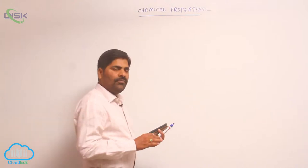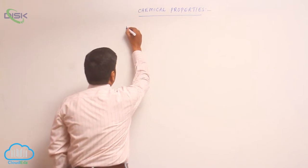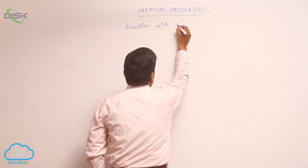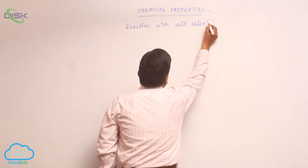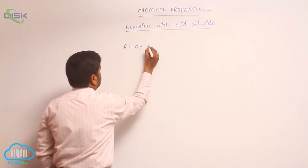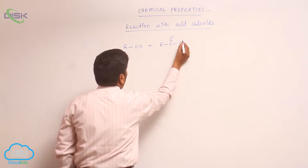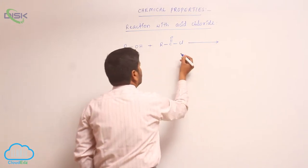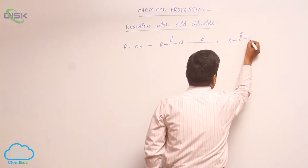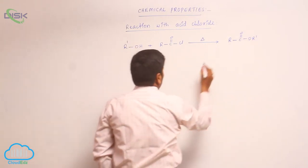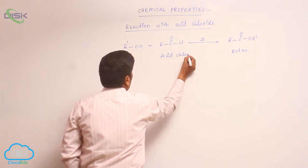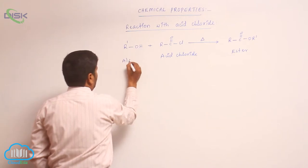Continuing the chemical properties of alcohols — reaction with acid chloride. When an alcohol reacts with acid chloride in the presence of heat, it forms an ester (R-C(=O)-R'). This product is an ester, while the reactant shown here is acid chloride, and the other reactant is alcohol.